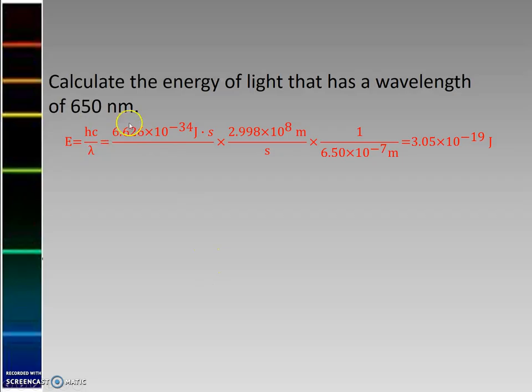And so now we can add a little bit more information onto our light calculations. So we can turn wavelength into energy, for example. We know that energy is equal to hc over λ. So here's my Planck's constant.